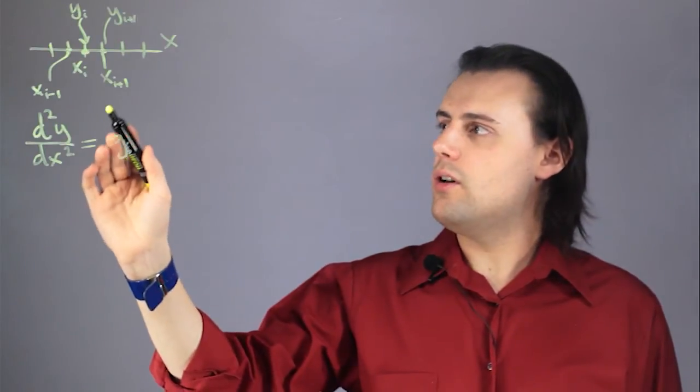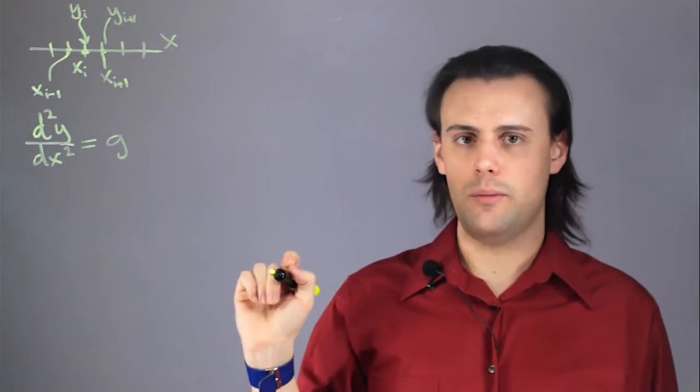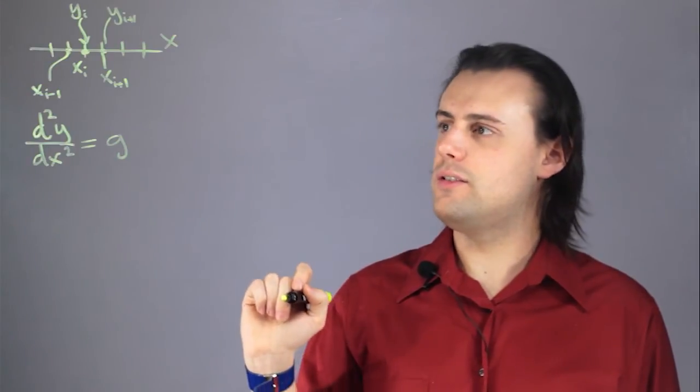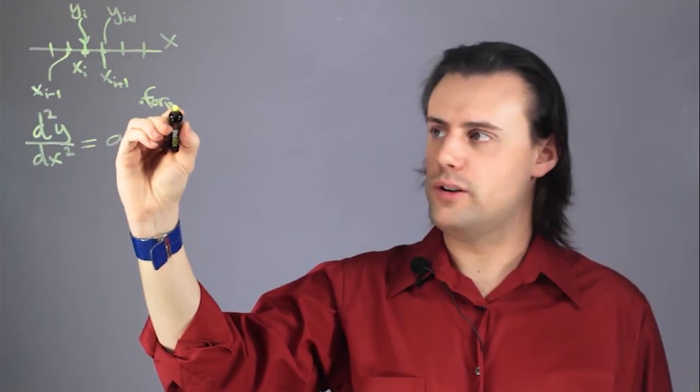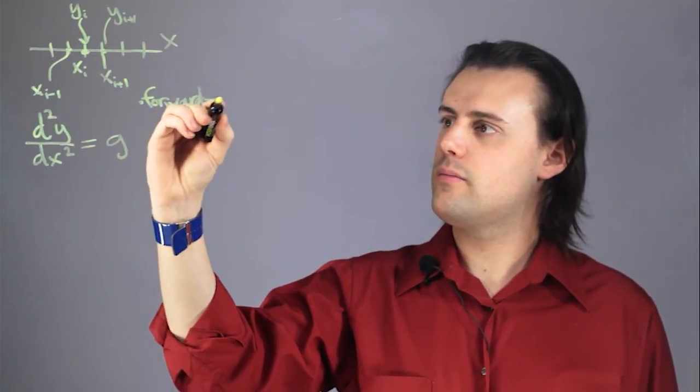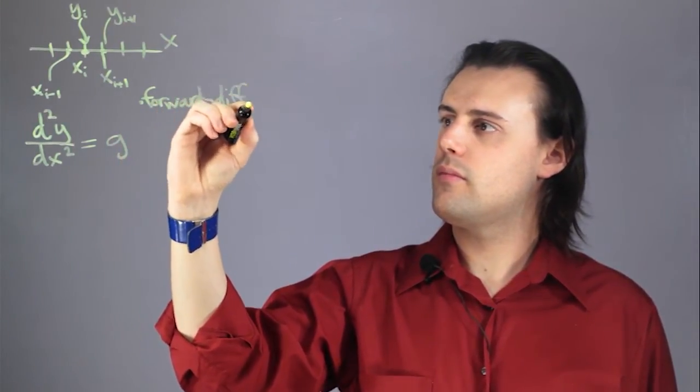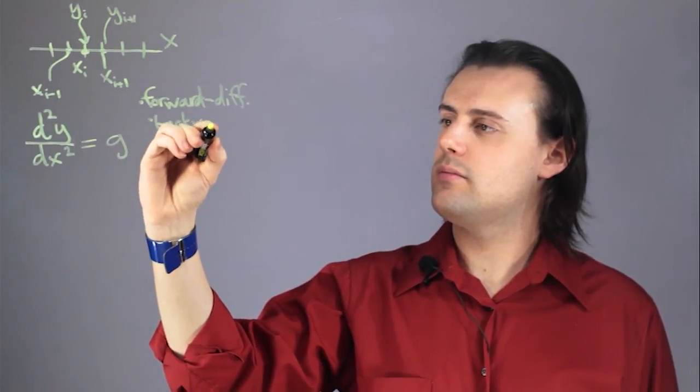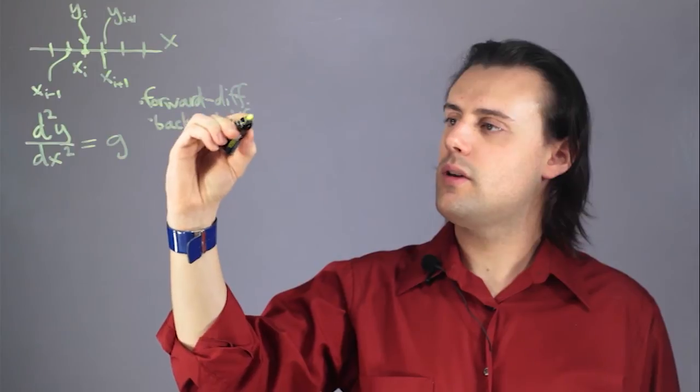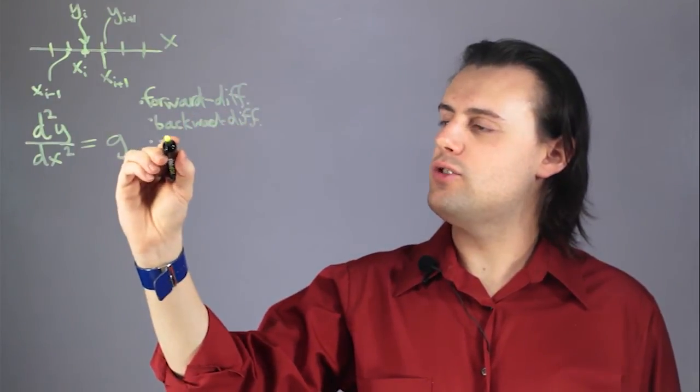So there are three main types of finite difference schemes if you will. There's what's called forward difference, there's backward difference, and finally there's central difference.